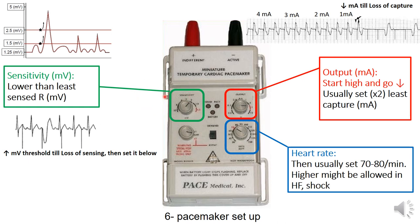The third parameter to set is sensitivity — in simple terms, the threshold at which the pacemaker detects the patient's native heart rhythm. If we set sensitivity too low, the pacemaker may sense the T wave and become inhibited inappropriately. On the other hand, if sensitivity is set too high — above the QRS voltage — the pacemaker may not detect the native heart rate and fire continuously in an asynchronous mode.